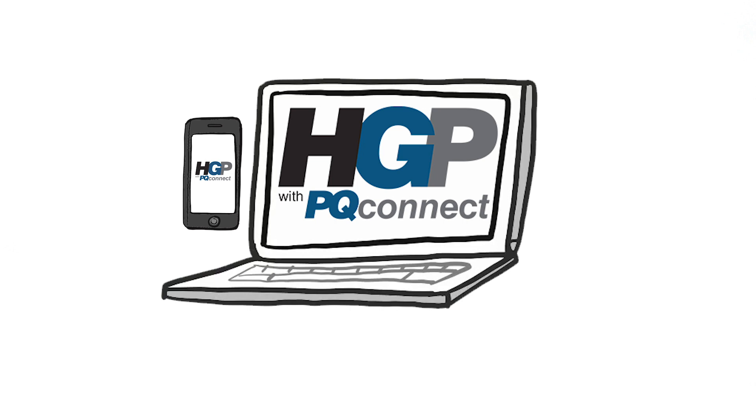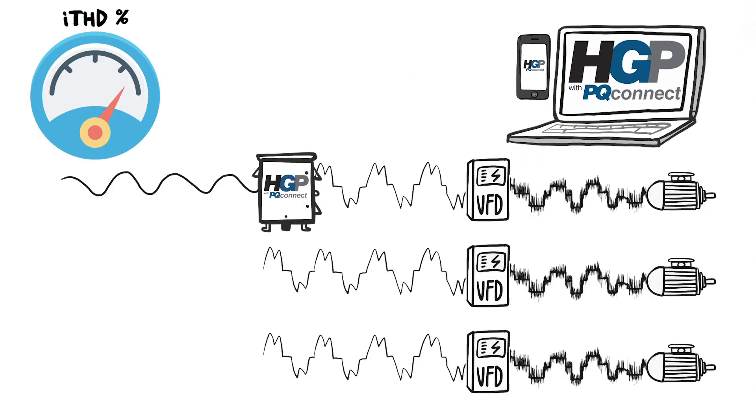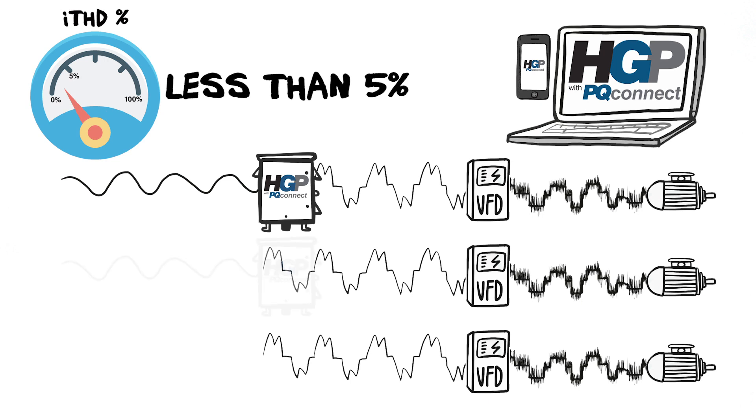TCI's HGP with PQConnect is the first intelligent passive harmonic filter with remote connectivity and contactor controls. It will reduce current harmonic distortion to less than 5% and provide real-time data to your SCADA system.